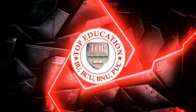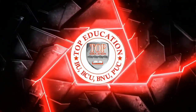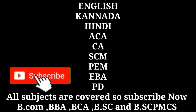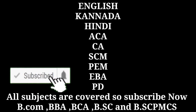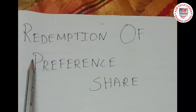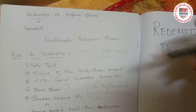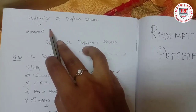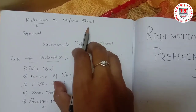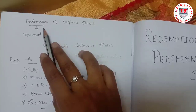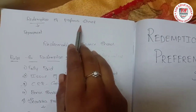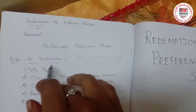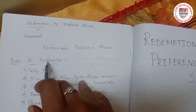Today we are going to learn about redemption of preference shares. Redemption means repayment — repayment of preference share capital to the preference shareholders is called redemption of preference shares. We will also look at the rules that are followed for the redemption purpose.